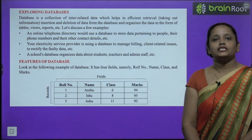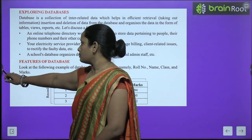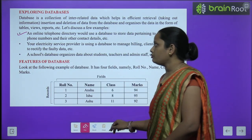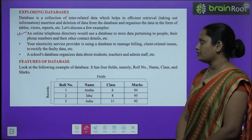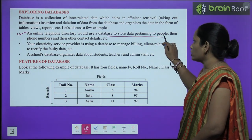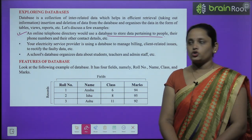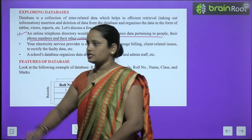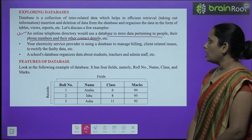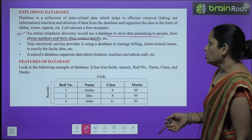Now there are some examples. Pehla example hai: an online telephone directory would use a database to store data pertaining to people — data ko store karke rakhata hai, jo particular kisi person ka hota hai. Unka phone number store karna hai and their contact details — ye saari cheezon ko store karta hai.